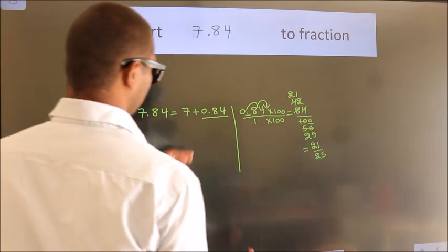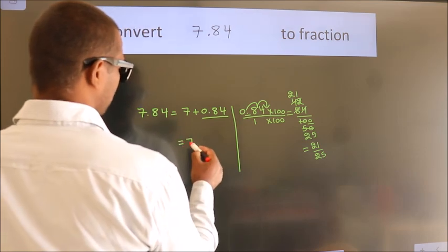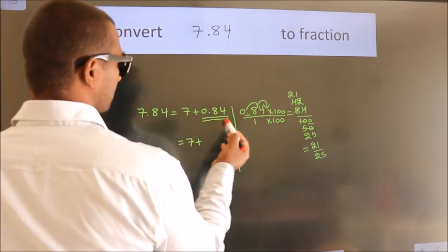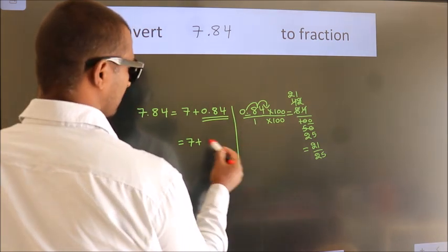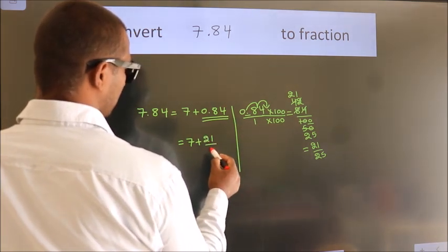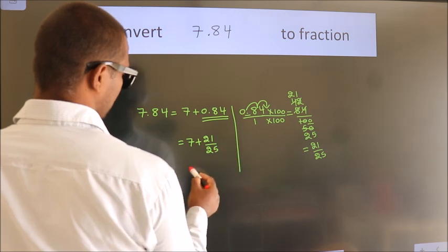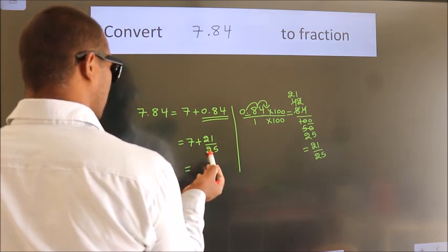Now here, 7 plus, in place of 0.84 we write this fraction 21 by 25. 7 plus 21 by 25.